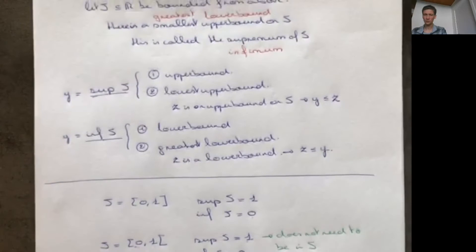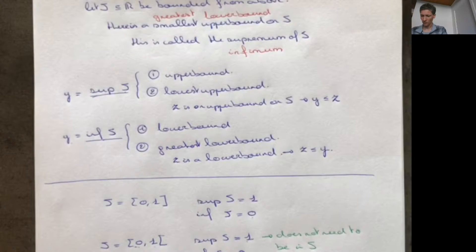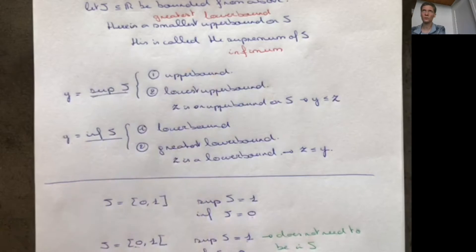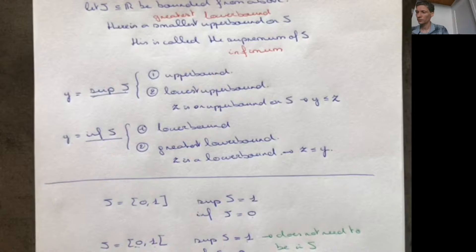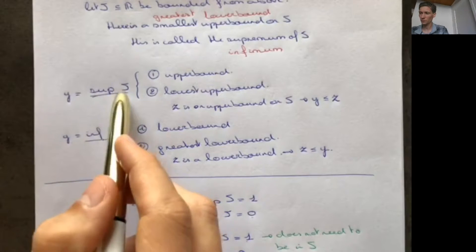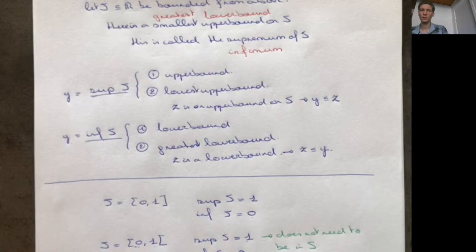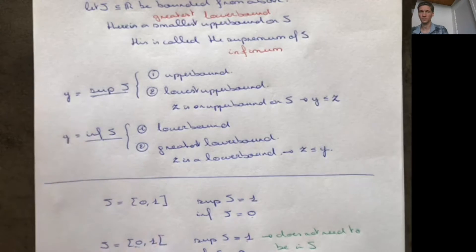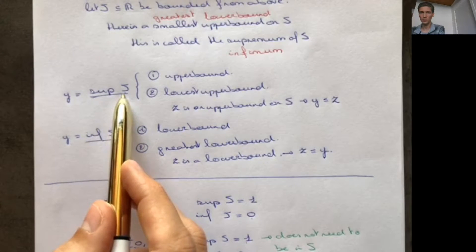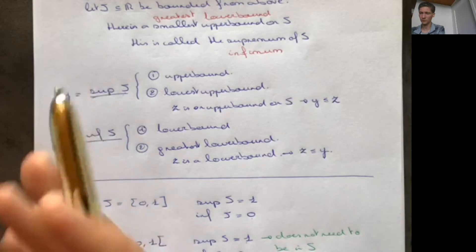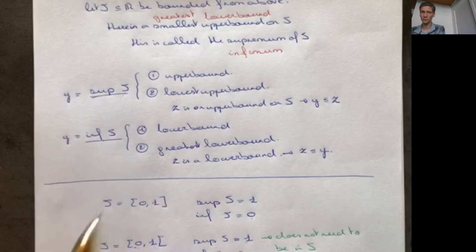These are the definitions of the supremum and infimum. An important thing to notice is that you're not going to show the existence of the supremum and infimum yourself. In fact, the existence of the sup and inf, once S is bounded, follows from the definition of the real number line. It's a very important property of the real numbers that these things exist. So once S is bounded from above, you can always find a supremum; once S is bounded from below, we always have an infimum.